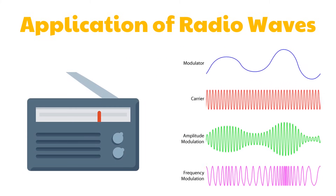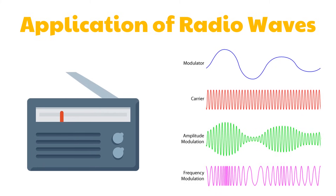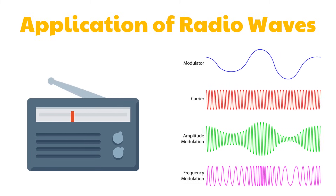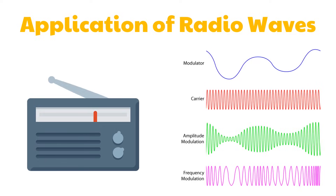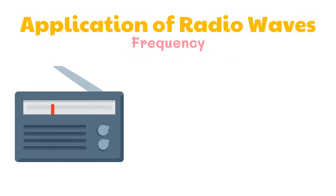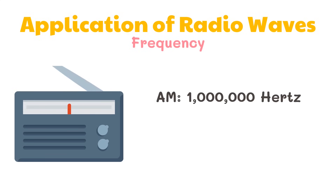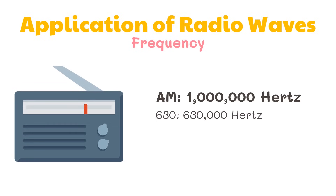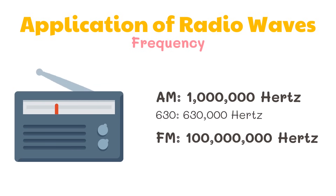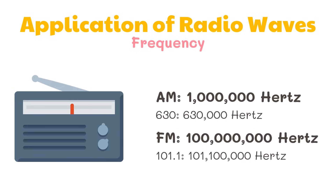Radio waves have a very wide range of wavelengths. The whole region of radio waves is divided into smaller regions of wave bands, and each wave band is allocated by law to a specific radio service. Frequency is an important characteristic of radio waves. AM broadcast frequency is about 1 million hertz — for example, tuning to 630 on the dial means the radio is tuning to 630,000 hertz. FM radio operates on 100 million hertz, so tuning to 101.1 FM means your radio is tuning to 101,100,000 hertz.